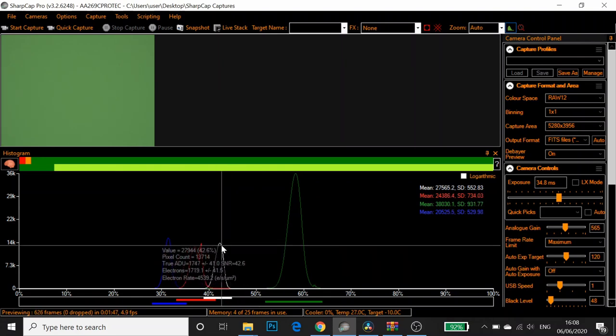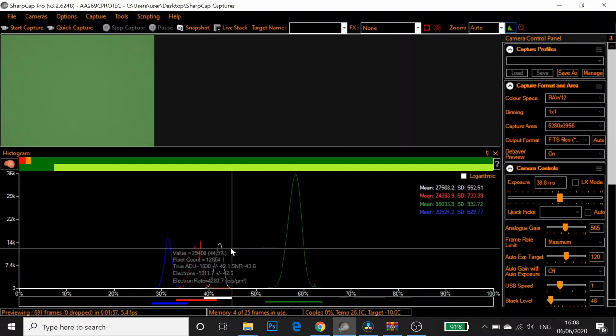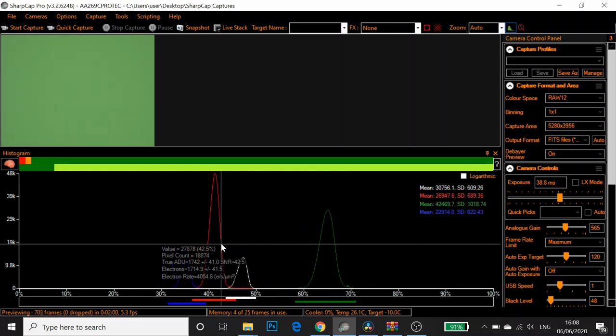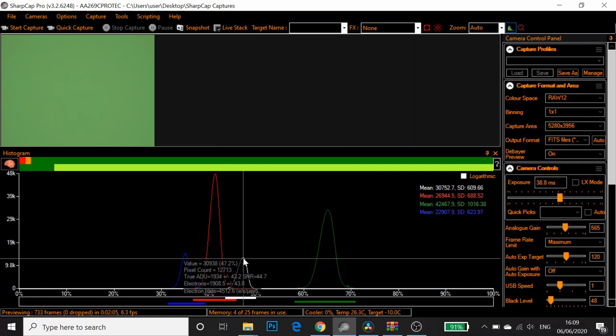You can see that changing it moves the histogram. So true ADU of about 1747, so just a touch more.